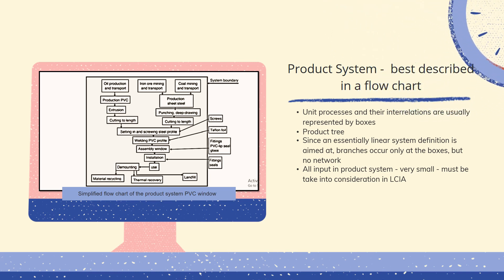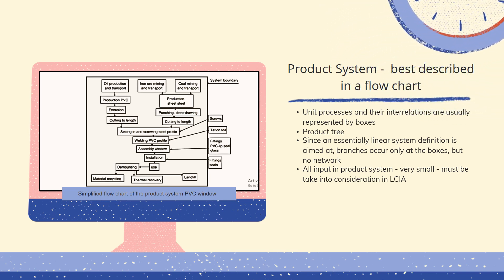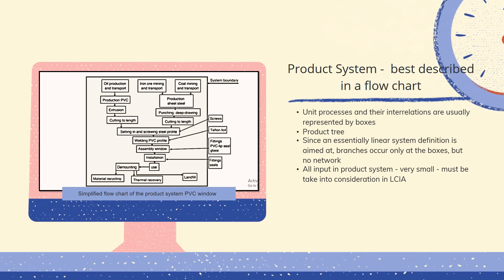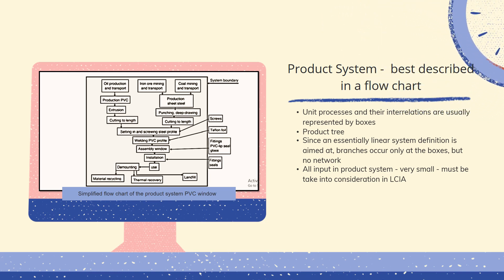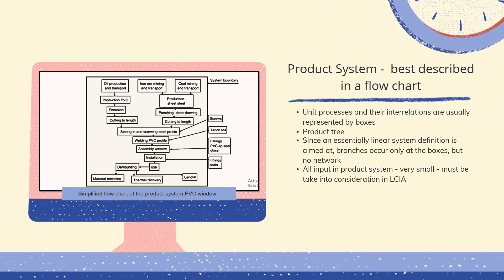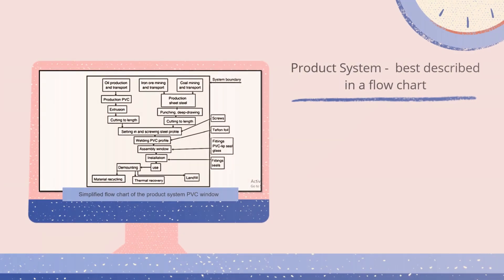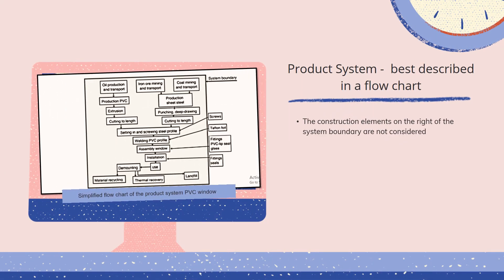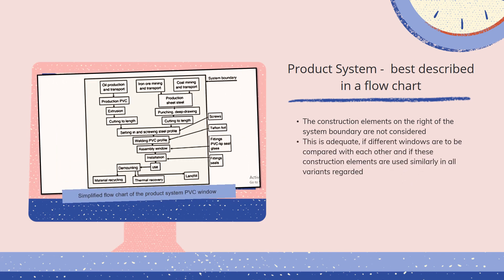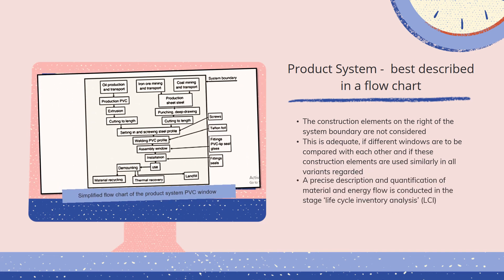Because compared to mass, very small emissions can nevertheless show large effects. Within comparative LCAs, large parts of the life cycle may be omitted in principle if they match accurately in all systems compared. For example, the construction elements on the right of the system boundary — screws, Teflon foil, fittings, etc. — are not considered. This is adequate if, for instance, different windows — PVC, wood or aluminium windows — are to be compared with each other and if these construction elements are used similarly in all variants regarded. A precise description and quantification of material and energy flow is conducted in the stage Life Cycle Inventory Analysis, LCI.